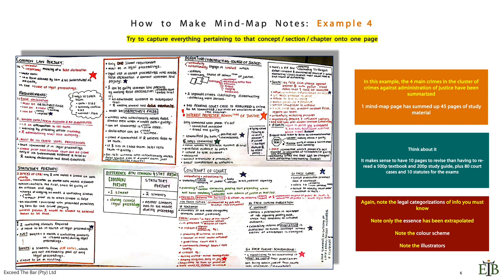Again, note the legal categorization of info that you must know. Note that only the essence has been extrapolated. Check out the color scheme. Here she used a two tone or maybe three. And note the illustrators. So it made sense for her. It even made sense for me. And we aced our criminal law exams with it.